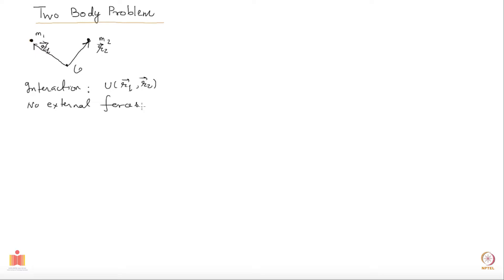Here I have made an assumption that the potential energy only depends on where the particles are. But now I want to further assume, which is very reasonable, that the force is such that the potential energy does not change if you take the entire system and move it somewhere else. Meaning it cares only about what is the difference between r2 and r1. So if I translate this entire thing by some amount, the potential energy does not change.